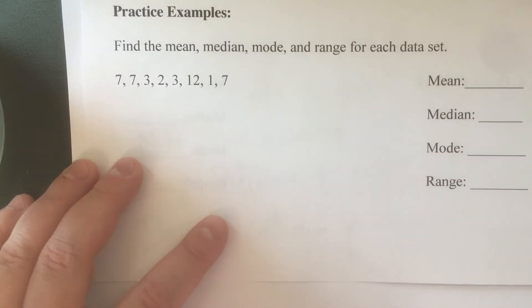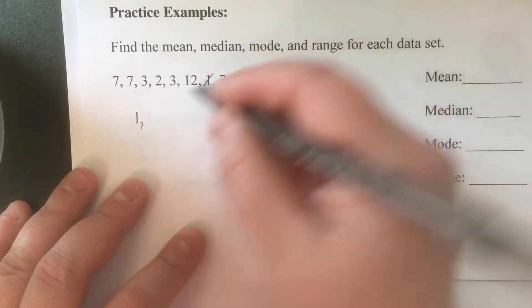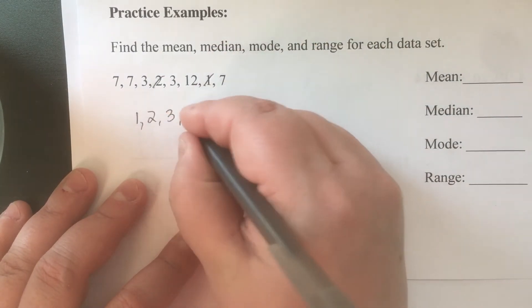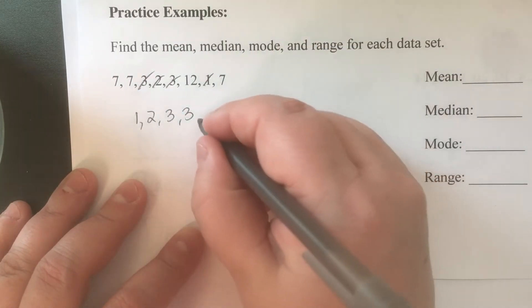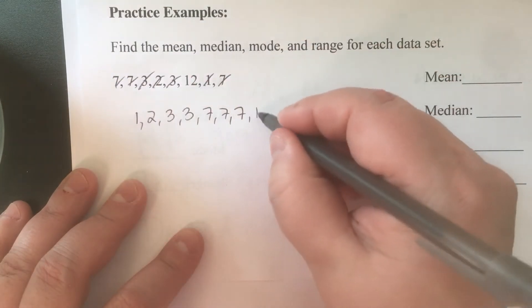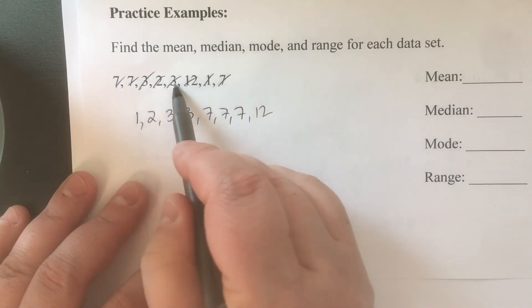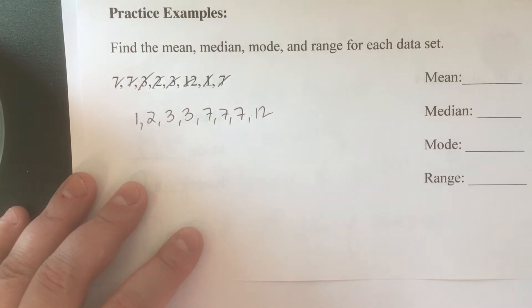We're going to put these numbers in order from least to greatest. So 1, 2, 3, 3 - I have one, two, three 7s and a 12. There's my data. I'm going to double check to make sure I have the same number of numbers: 1, 2, 3, 4, 5, 6, 7, 8 and 1, 2, 3, 4, 5, 6, 7, 8. Alright, so to find the mean we are going to add and then divide by 8.